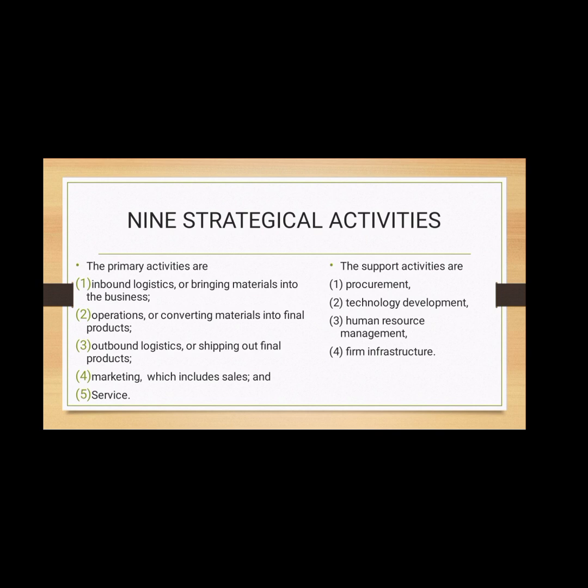The support activities are handled by specialized departments, which include procurement (obtaining and paying for goods and services), technology department, human resource department, and firm infrastructure. Infrastructure covers the cost of general management, planning, finance, accounting, legal, and government affairs. The firm starts to examine its cost and performance in each value-creating activity, benchmarking against competitors and looking for ways to improve. Managers can identify the best practices of the world's top companies by consulting customers, suppliers, distributors, financial analysts, and the media.